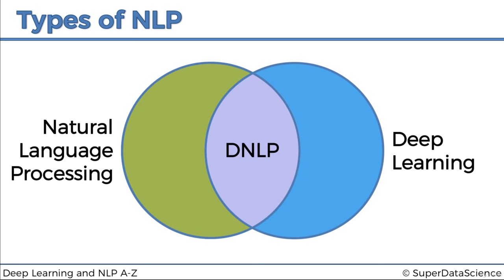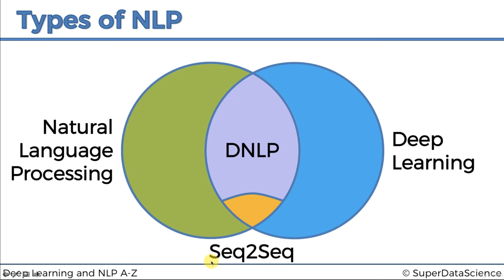And finally, there is another part of this Venn diagram which is very important to us — and it is this part over here: a subsection of deep NLP called sequence to sequence. Sequence to sequence models are the most cutting edge, the most powerful models that exist right now for natural language processing, and that's what we're going to be looking at.